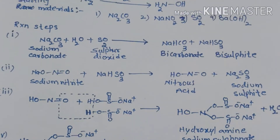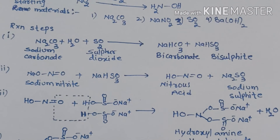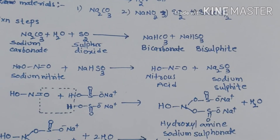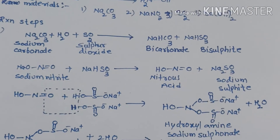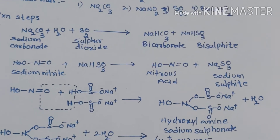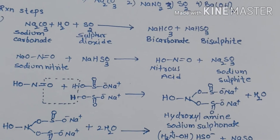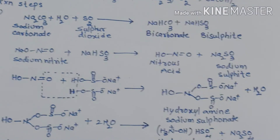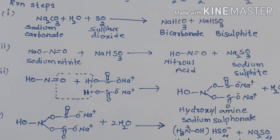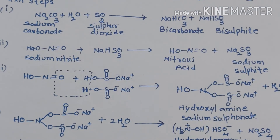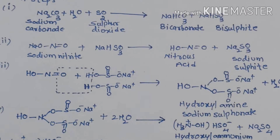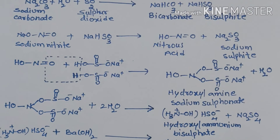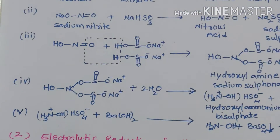In the third step, the nitrous acid formed reacts with the sodium hydrogen sulfite formed in the first step and forms hydroxylamine sodium sulfonate. This salt is also known as the sodium salt of hydroxylamine disulfonic acid. This sodium salt of hydroxylamine disulfonic acid undergoes acid hydrolysis and forms hydroxyl ammonium bisulfate along with sodium sulfate.